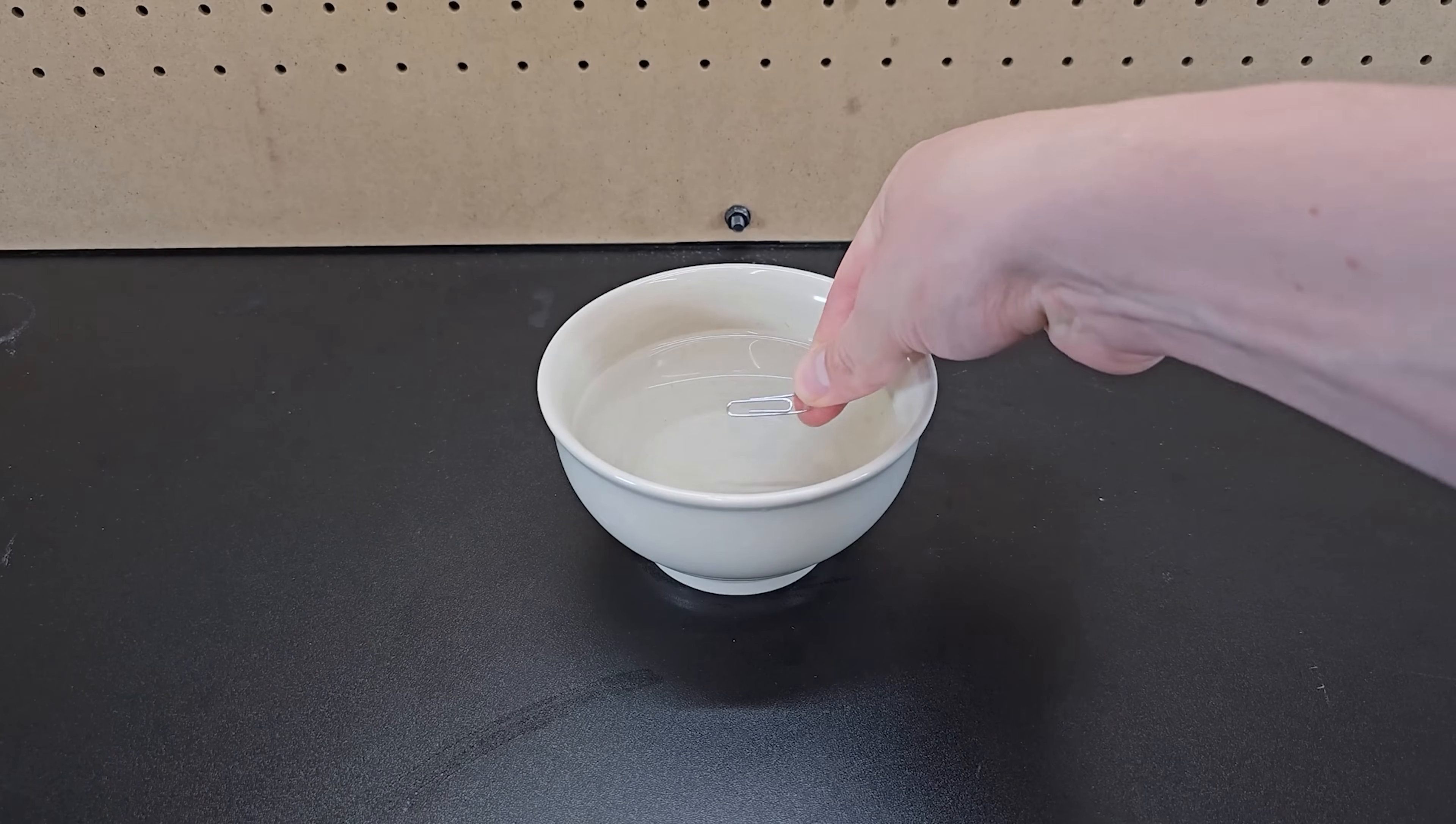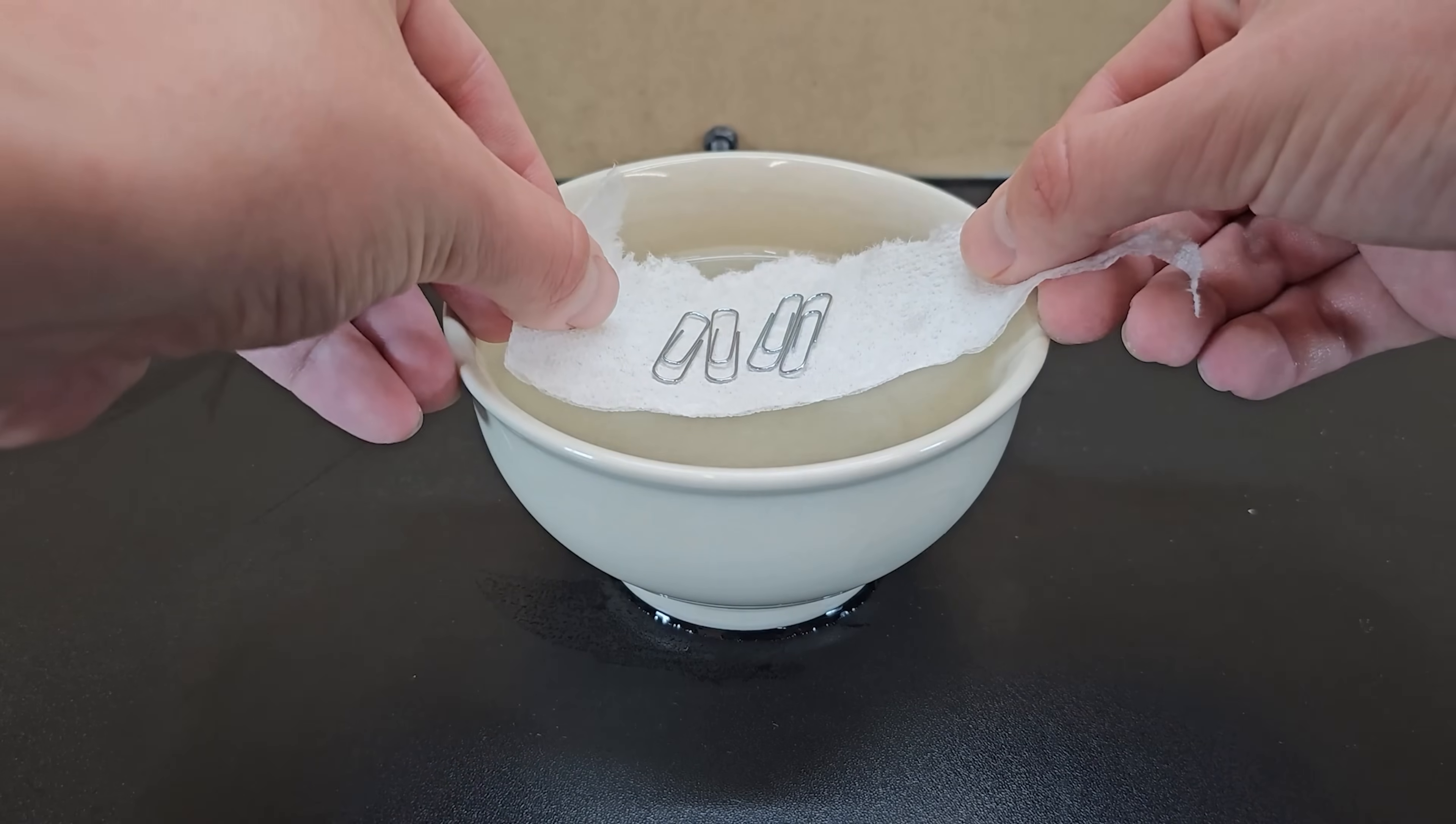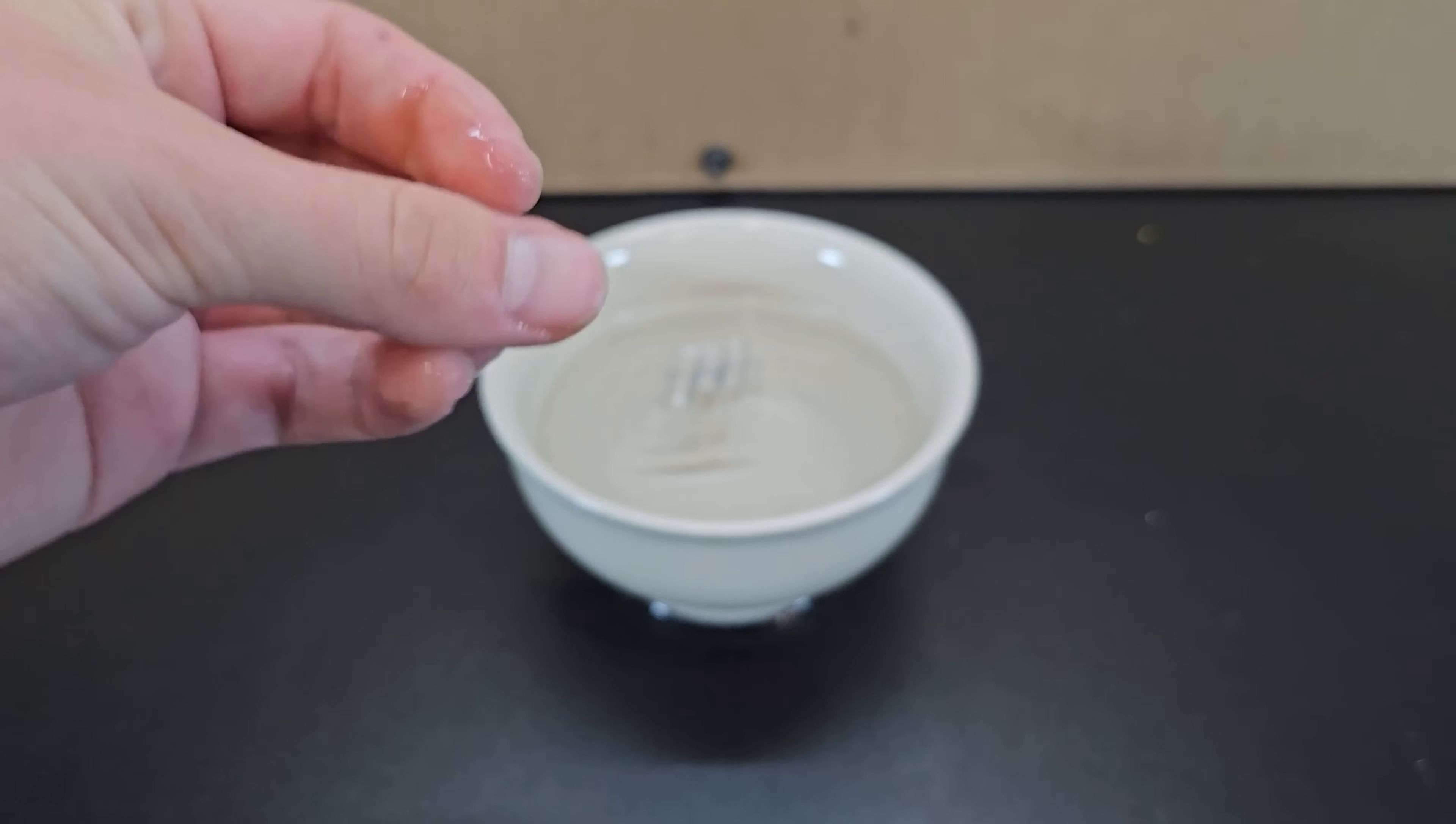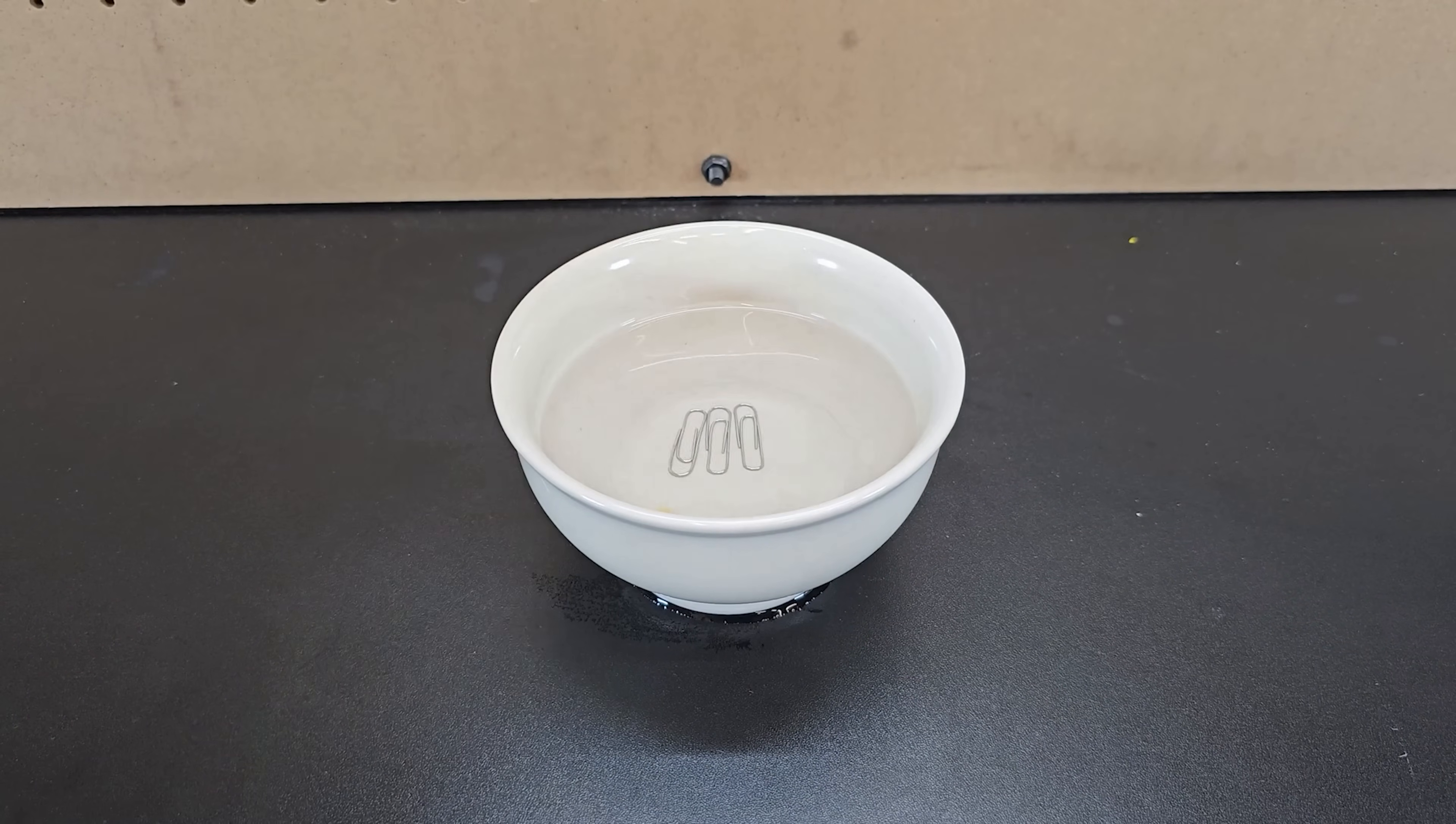You might remember from season 1 that although a metal paperclip is more dense than water and should sink, you can carefully place the paperclips on the surface of the water and surface tension will hold the paperclips up. However, if you take some soap and apply it on your fingers and then dip your fingers in the water gently, the soap causes the paperclips to sink.